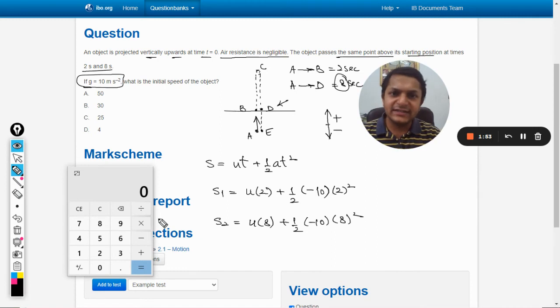So these are the two different equations which we have created for the two different cases - that is when the body is moving from A to B and then the body is coming back to D. And it says that both of these displacements are equal to each other, so let us equate them and we will find the value of u.